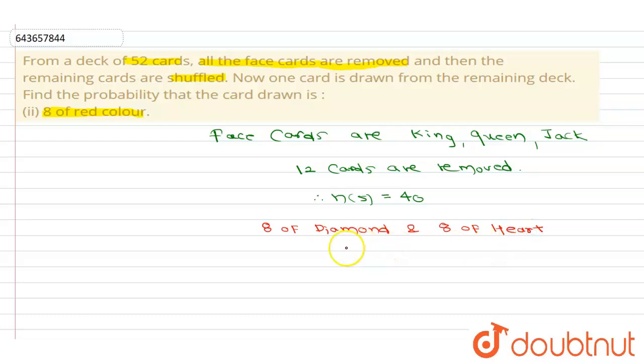Now, therefore we can write N of E. E is our required event which is equal to 2.